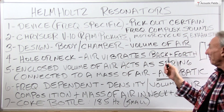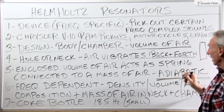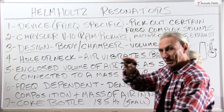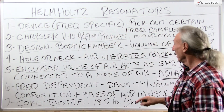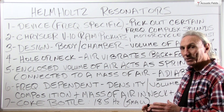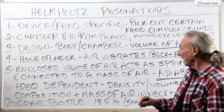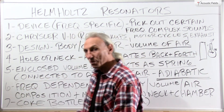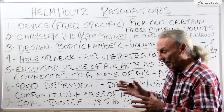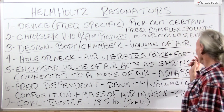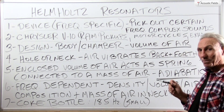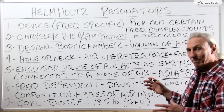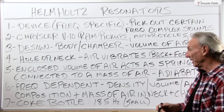We have the hole or neck with air vibrating back and forth, and then the air inside the resonator acts as a spring. You get a large volume of air inside moving up and down like a spring, and that is connected to the total mass of air in there. So you have this mass of air defined by the size of the container, the opening of the neck, and the narrowness of the neck — and that mass of air moves up and down as a spring.